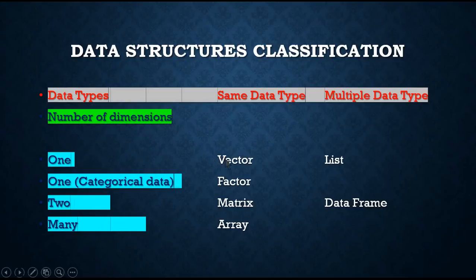One-dimensional data structures include vectors and lists. Vectors belong to the same data type. Lists belong to multiple data types — they can hold numeric, character, complex, and all data types in a single list. Factor is a special data structure used for categorical data; it has one dimension and can hold the same data type but is categorical in nature.